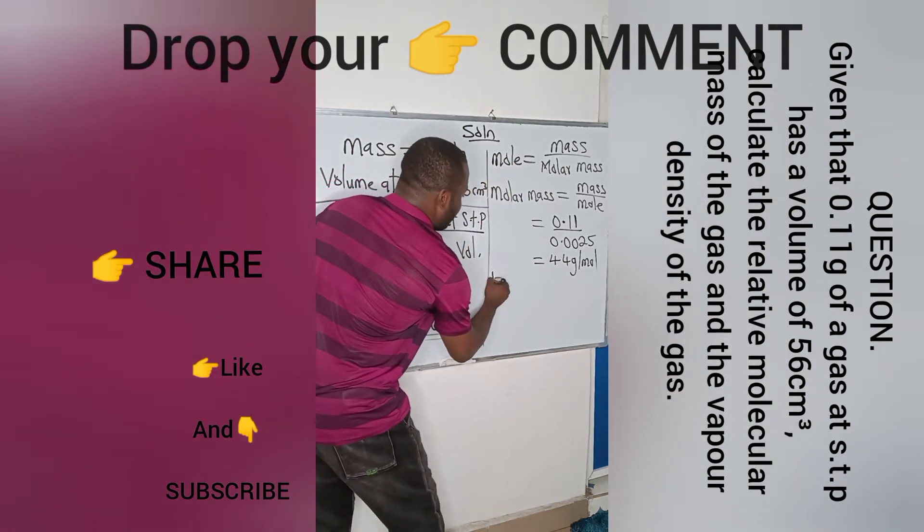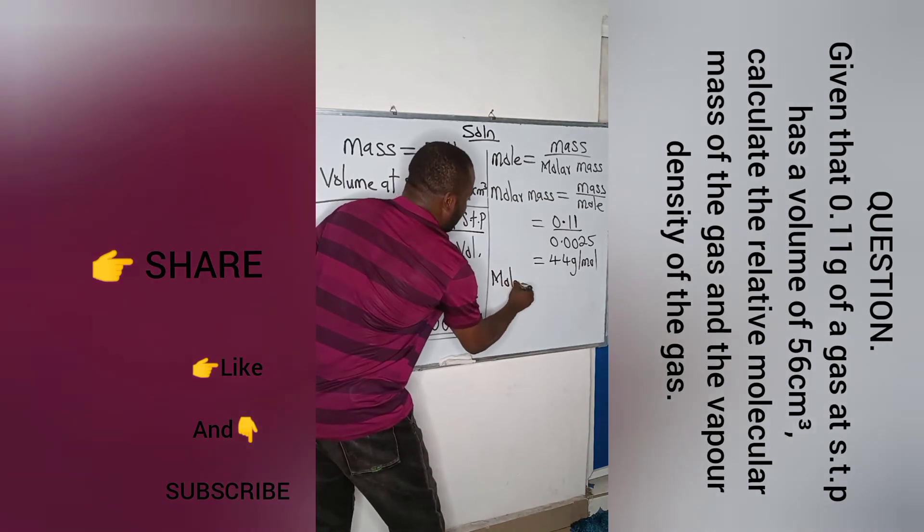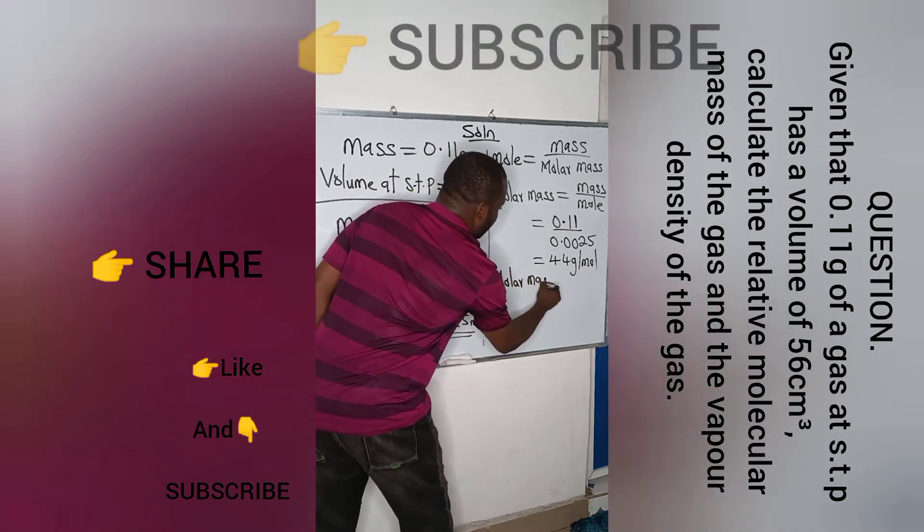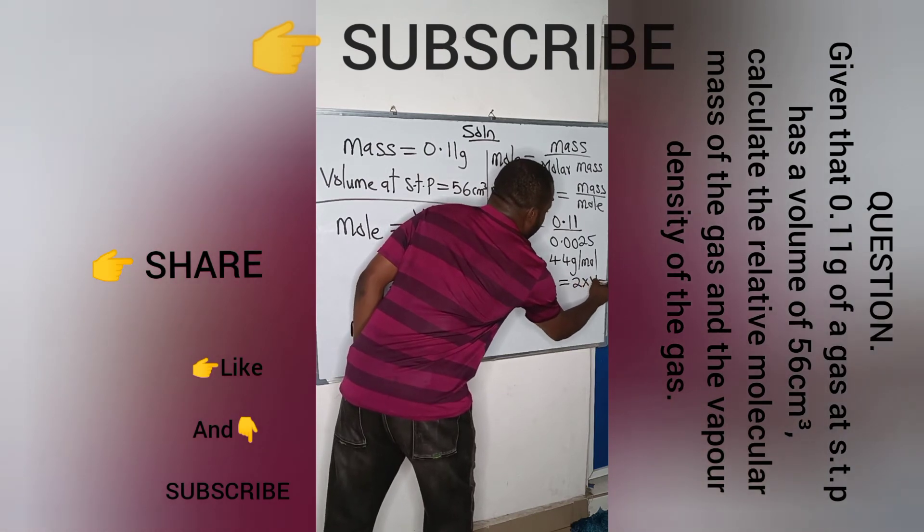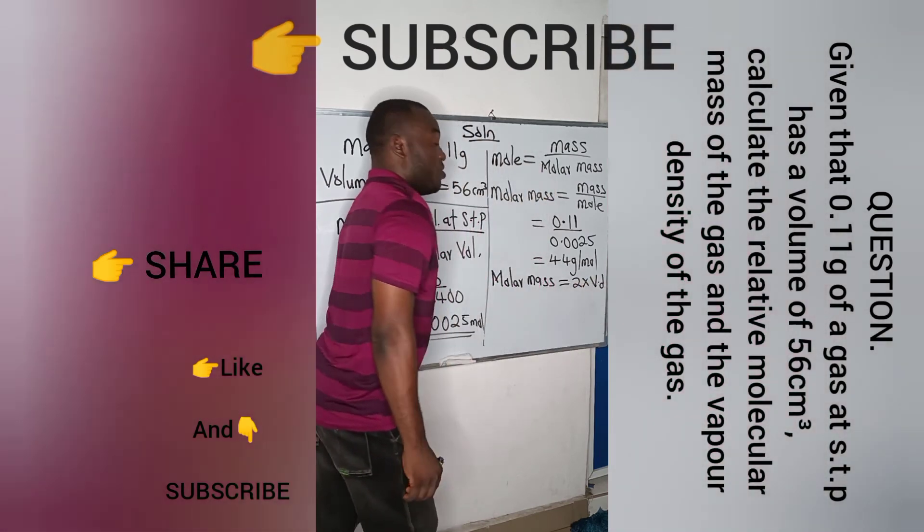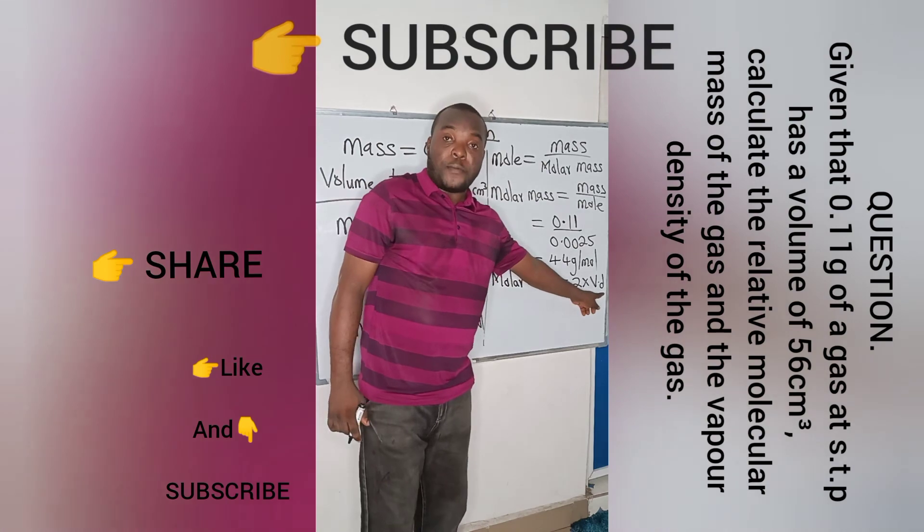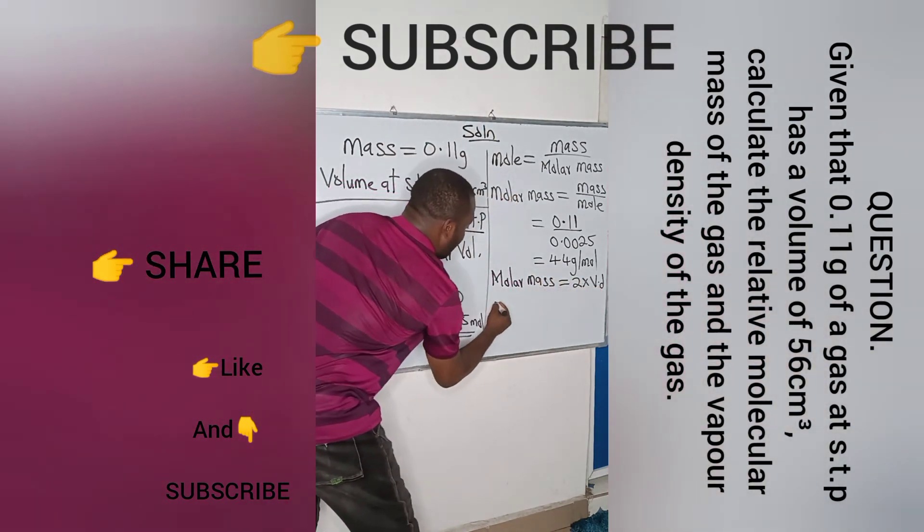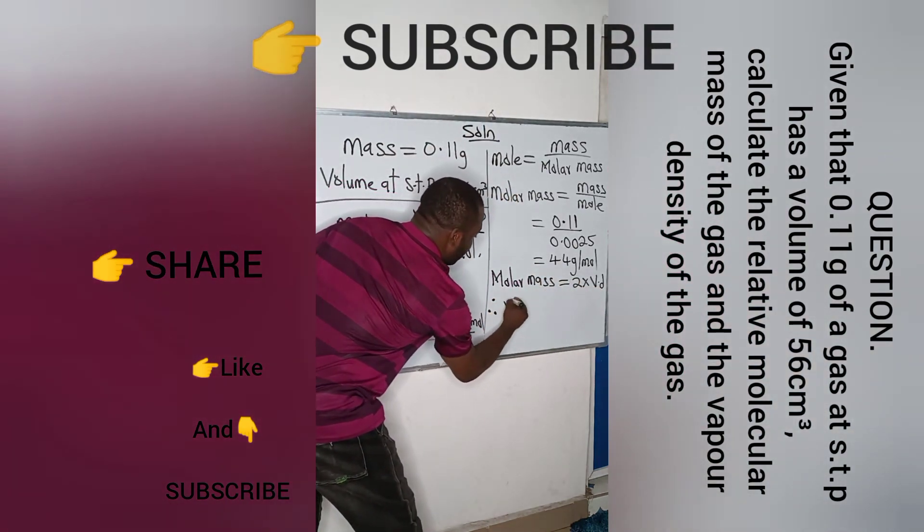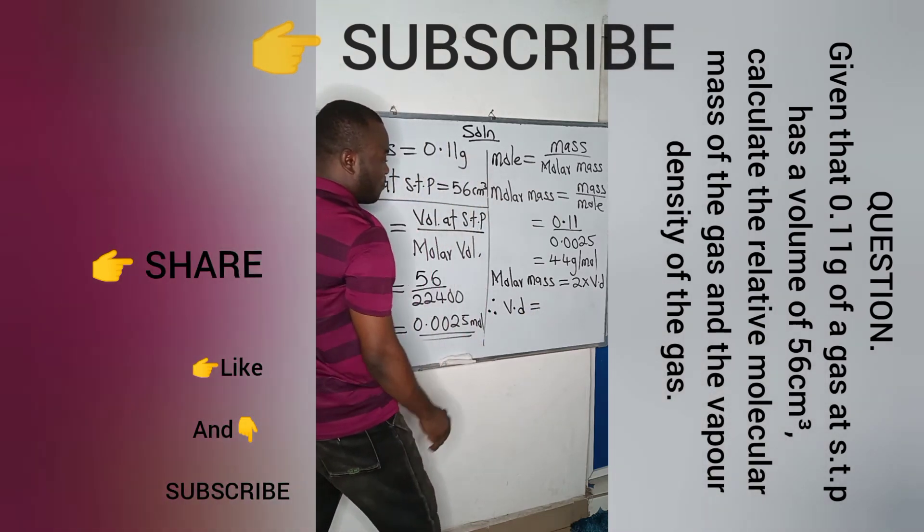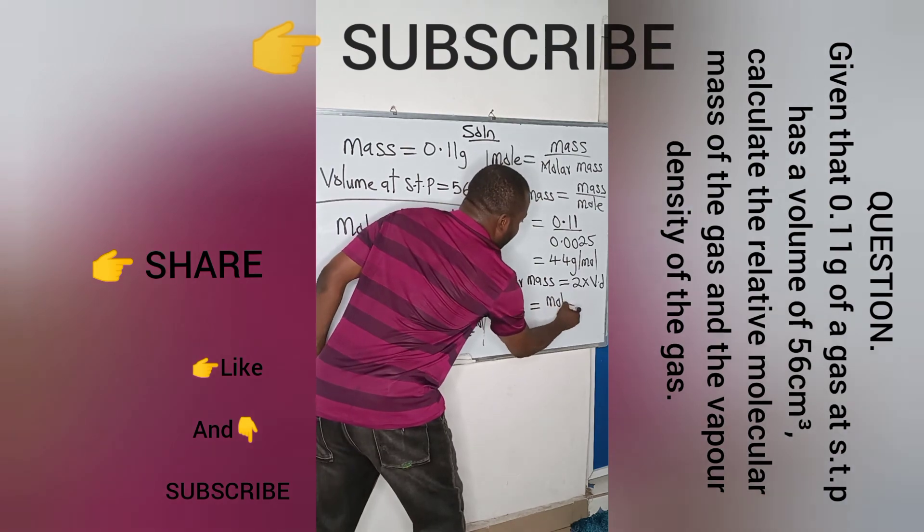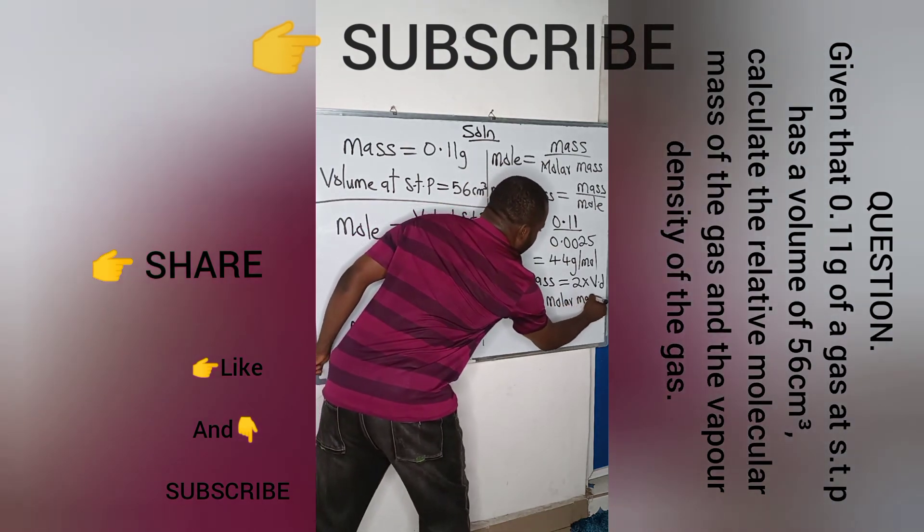Recall that molar mass of a gas or relative molecular mass, whichever one you call it, is equal to 2 multiplied by the vapor density. Here, my V stands for vapor density. Now, making vapor density subject of formula simply means that the vapor density of the gas will be equal to the molar mass of the gas divided by 2.